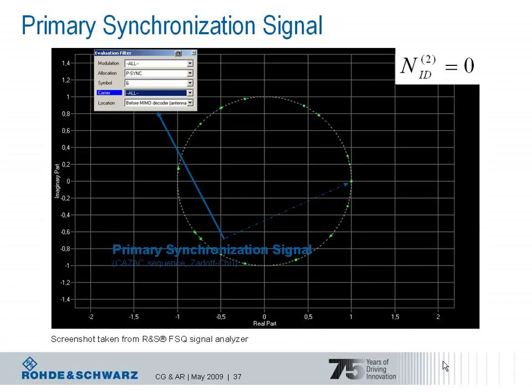When we look at the constellation diagram of the primary synchronization signal, recorded here with Rohde and Schwarz leading signal analyzer FSQ, we get this result. The constant amplitude is indicated by the unit circle. The good autocorrelation can be observed by looking at each individual subcarrier carrying the primary synchronization signal.